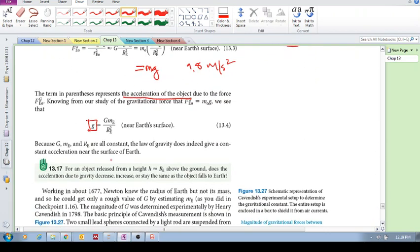So because G, the mass of the Earth, and the radius of the Earth are all constant, the law of gravity does indeed give a constant acceleration near the surface of the Earth. So Fg equals Mg. Now we know where that g has come from.